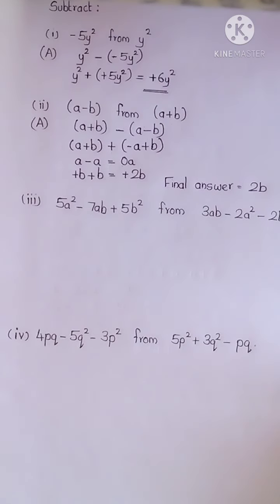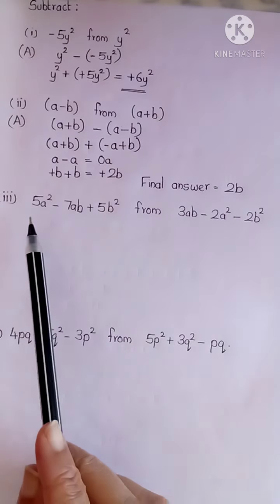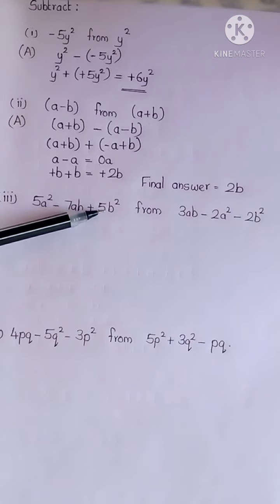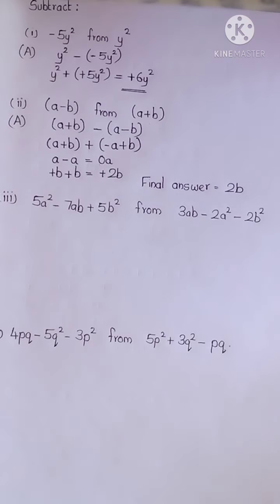Hope you understood. Now let us go for the third one: subtract 5a square minus 7ab plus 5b square from 3ab minus 2a square minus 2b square. Students, here you are subtracting two trinomials. So first write the algebraic expression for this.